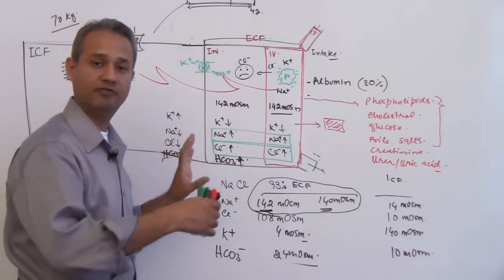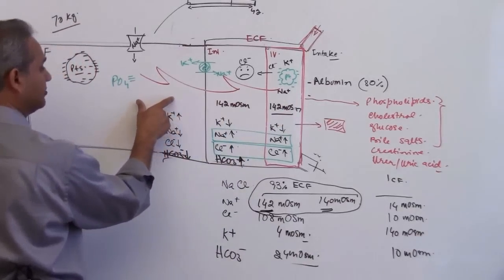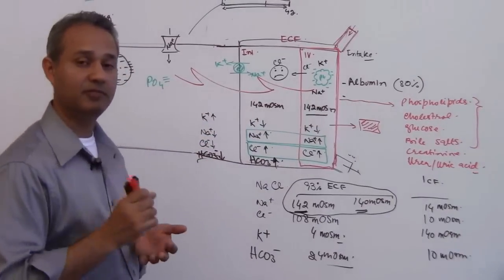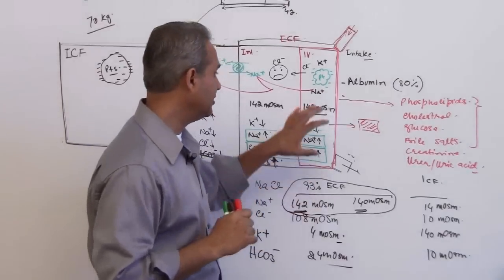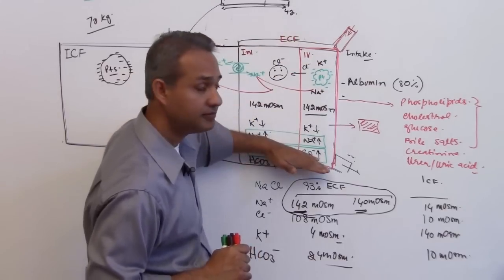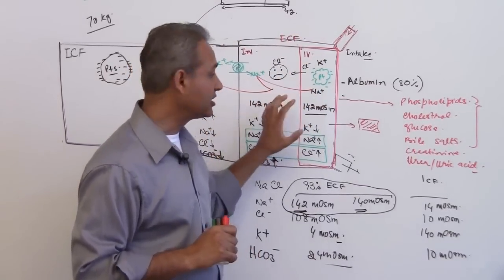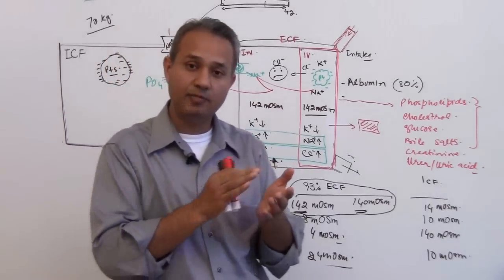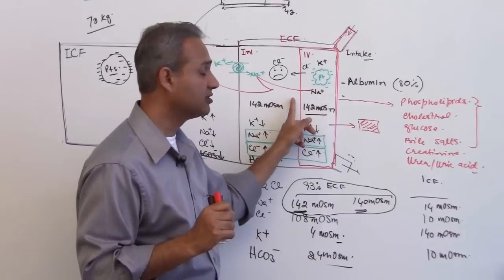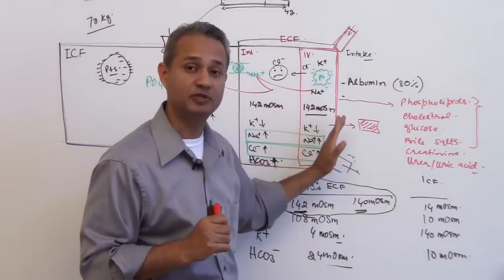So what are the factors which keep water here and what are the factors which keep water here? Please remember this now. Do not forget this. The water distribution in this area - intravascular versus interstitial. The factors which decide how much water gets out of the vessel into the interstitium and then how much water comes back.